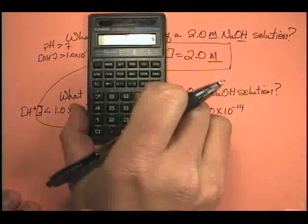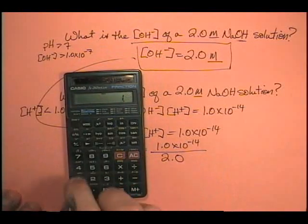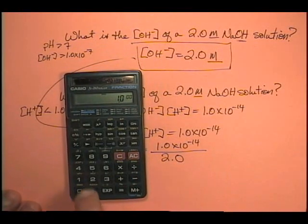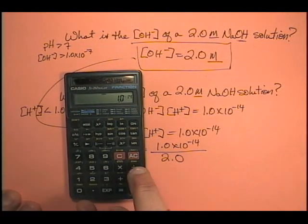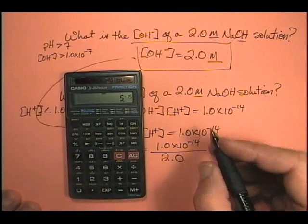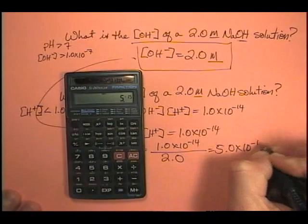All right. Let's go ahead and calculate that. 1.0, use my exp key, exp negative 14 divided by 2 equals 5.0 times 10 to the minus 15.